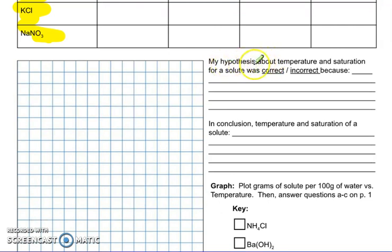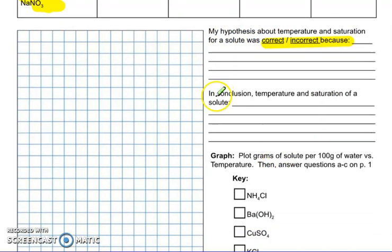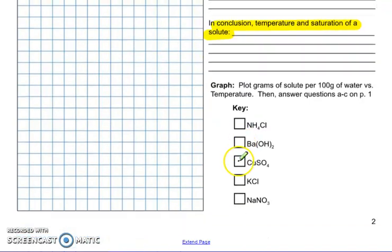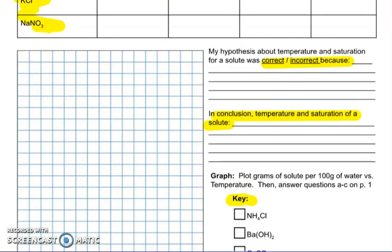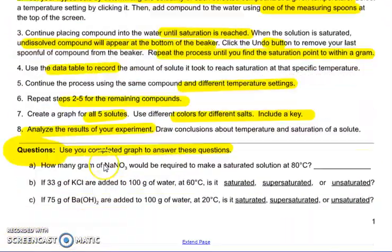At the end, you'll analyze were you correct or incorrect and tell me why for your hypothesis. And make a concluding statement that generalizes your results about temperature and saturation of a solute. Here's where you're going to put your graph. Please make sure you include a key and use different colors for each one so I can track them. Once you have that graph, that is when you will answer your questions. So you can use your graph to find the intersections of your lines. Okay, have fun!